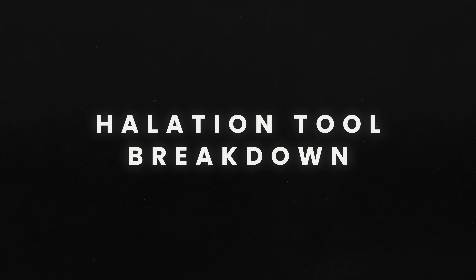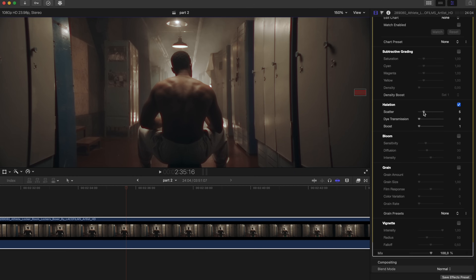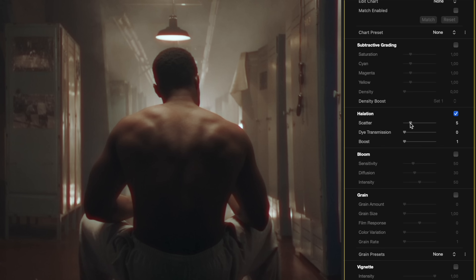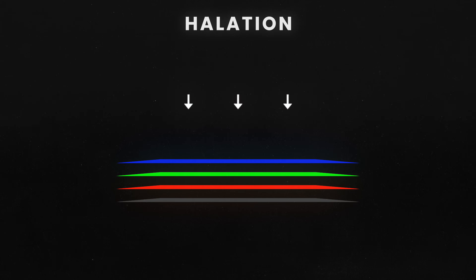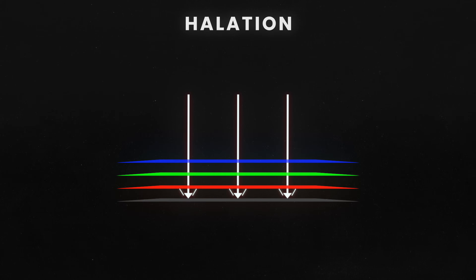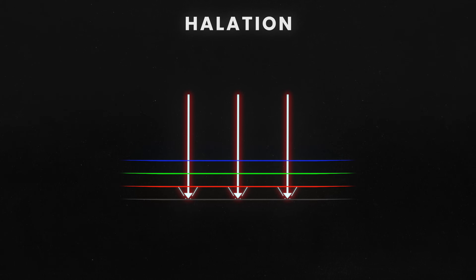Halation tool breakdown. In the halation tool, you have control over scatter. Scatter controls how much light spreads beyond the brightest areas of the image. Increasing scatter will create a more pronounced halo effect, making the light diffuse more naturally across surrounding areas. In traditional film, light passes through multiple layers of emulsion, each containing different colored dyes. When a bright highlight hits the film, some of the light scatters and reflects off the film base, creating the halo effect known as halation.